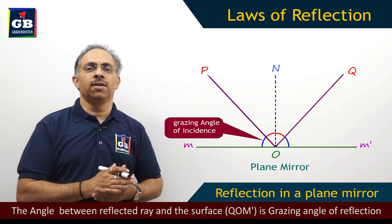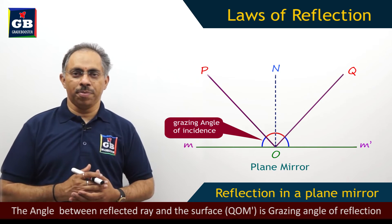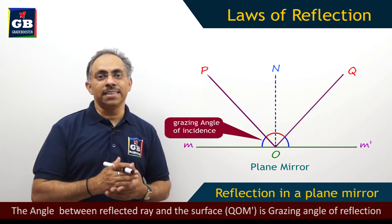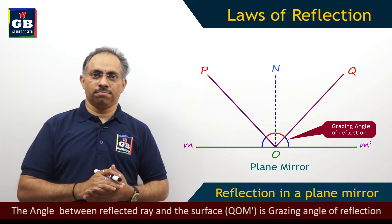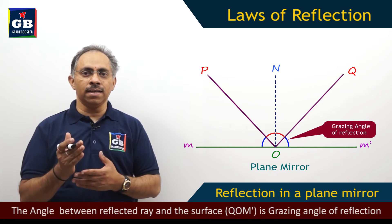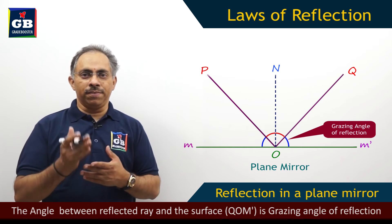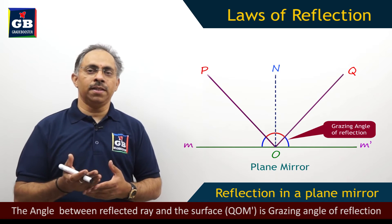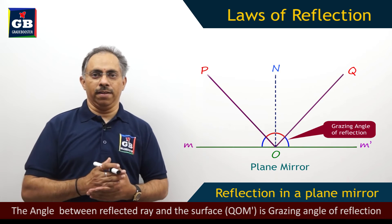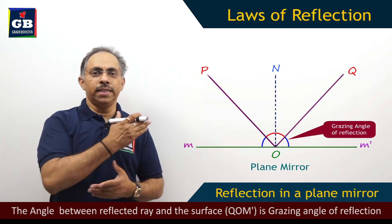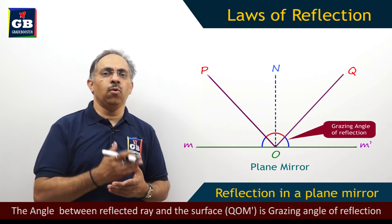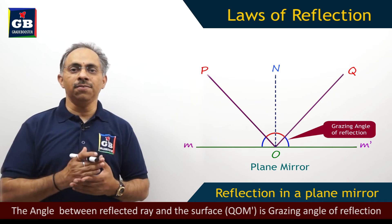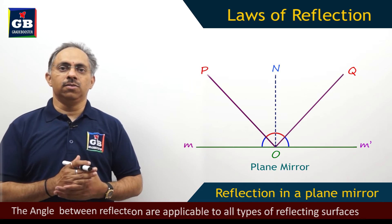We will denote the grazing angle of incidence by IG. Similarly, we will also have the grazing angle of reflection, which is the angle between the surface of the plane mirror and the reflected ray. Here it is angle QOM', and that is the grazing angle of reflection.